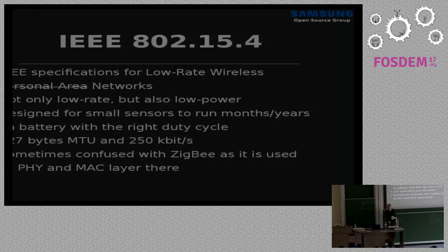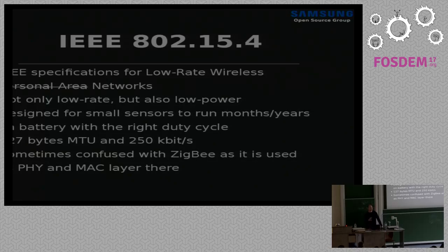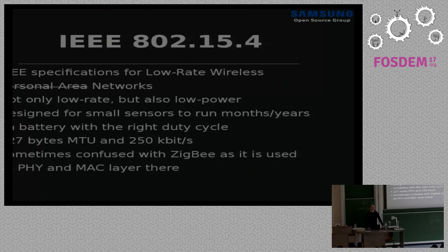The 15.4 specification is from IEEE. It was defined for low-rate wireless personal area networks — by now they've dropped the 'personal area' part, which makes sense. It's not only low rate but also low power. If you have a configuration with an MCU running something like RIOT or Contiki, you can have battery life of maybe months or even a year with a correct duty cycle — quite good compared to Wi-Fi. The MTU is only 127 bytes, which is quite challenging if you want to run IPv6 over it, and bandwidth is limited, but that's okay for machine-to-machine communication.